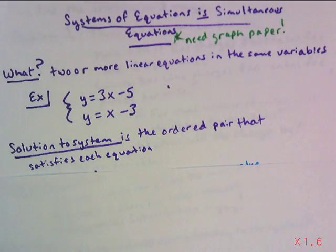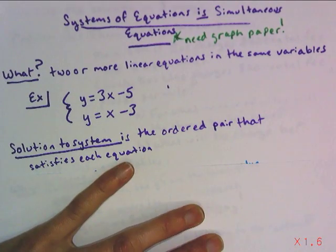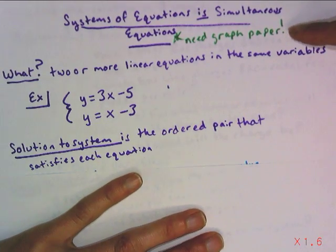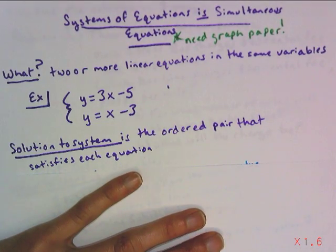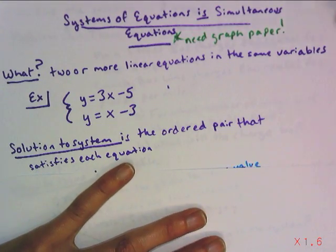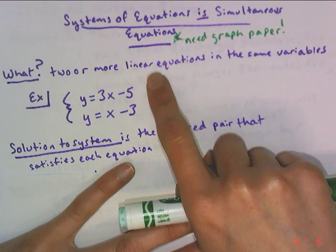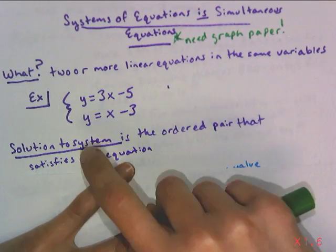Alright, so this unit is one of the most useful ones that we'll learn. It's called systems of equations, or the language they're using nowadays is simultaneous equations. Just up front, you will need graph paper. So what are we talking about when we say a system of linear equations? Well, it's two or more lines that have the same variables.